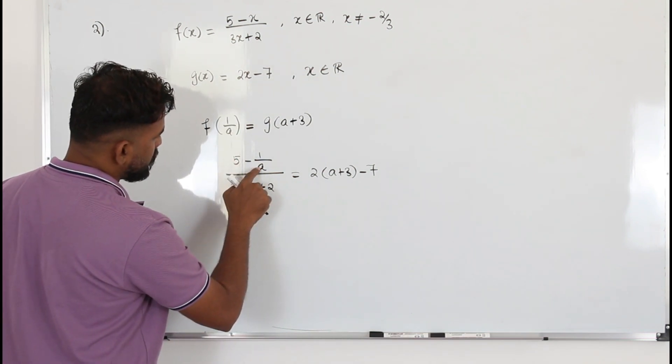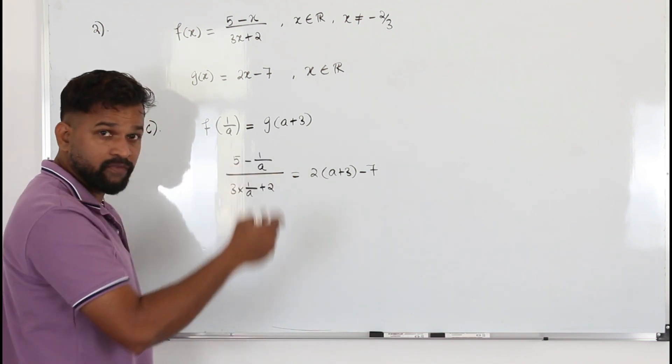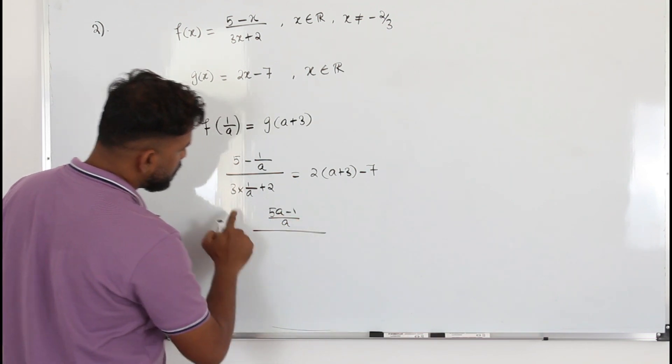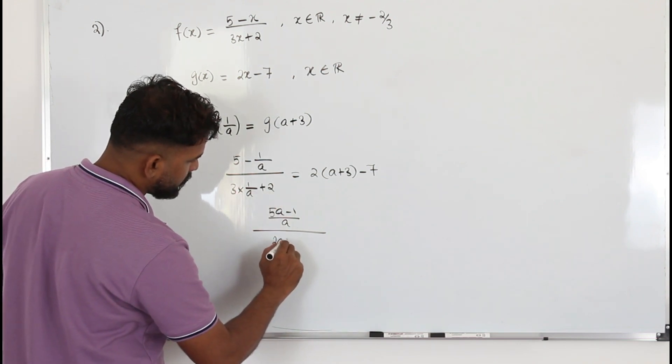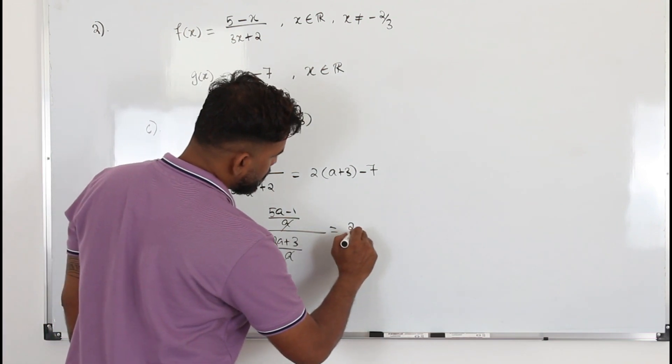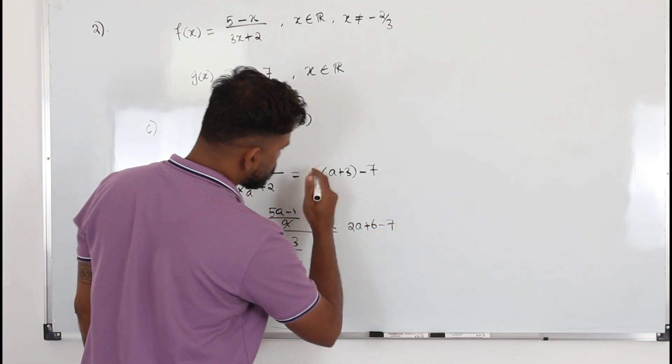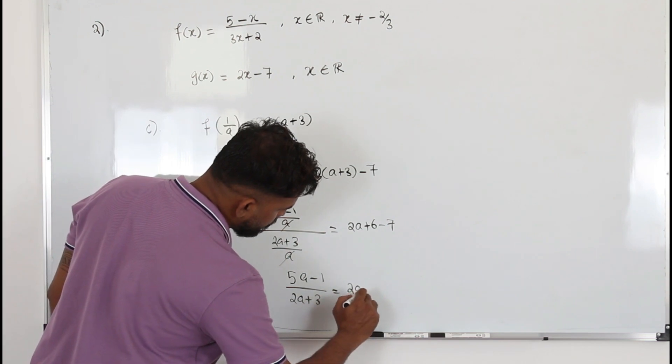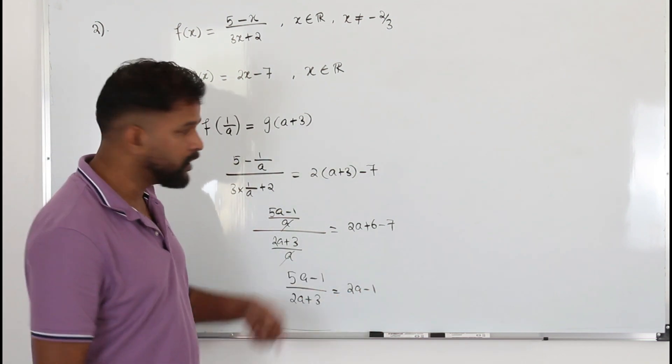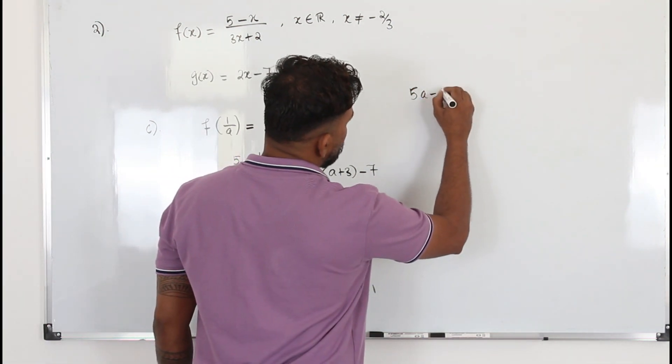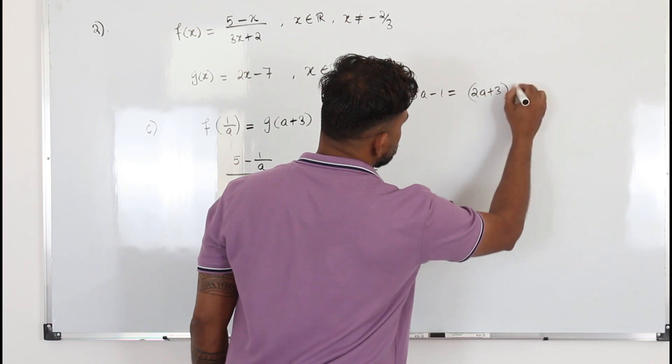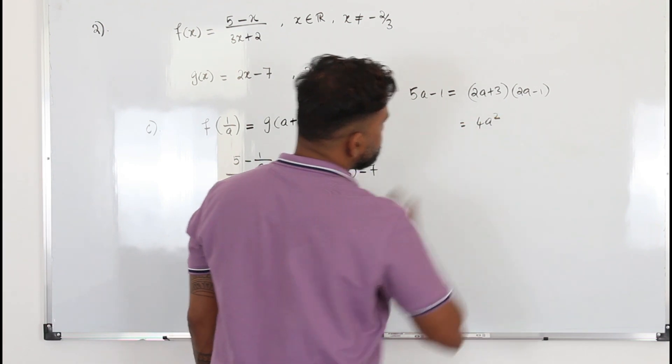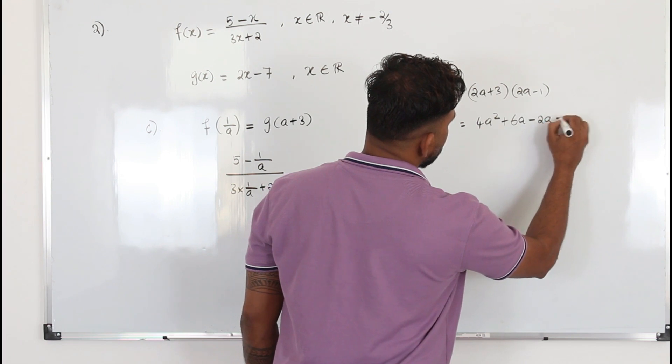Combine it, change it to a common denominator, a single fraction with the common denominator. So it's going to be (5a - 1) / a. Do the same thing here. (2a + 3) / a. This a can be cancelled. Here 2a + 6 - 7 once you open the bracket. So we got (5a - 1) / (2a + 3) equals 2a - 1. Bring this 2a + 3 here and multiply. You get 5a - 1 equals (2a + 3)(2a - 1).